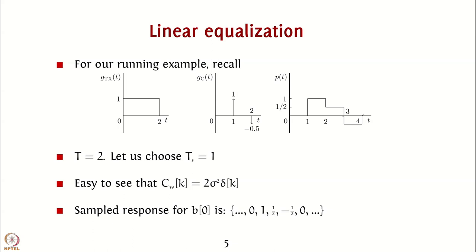Now let us evaluate the running example that we discussed in class on GNU Radio. We had a transmit pulse that was a rectangular pulse with amplitude 1 between 0 and 2 seconds. The effective channel was modeled as two impulses — one with amplitude 1 at the first sample and another at the second sample with minus half. Convolving GTX and GC gives P, which looks like: between the first and second samples it is 1, second and third samples it is half, and third to fourth samples it is minus half. Since we send symbols at two samples per symbol, there will be inter-symbol interference. Let us now model this in GNU Radio.